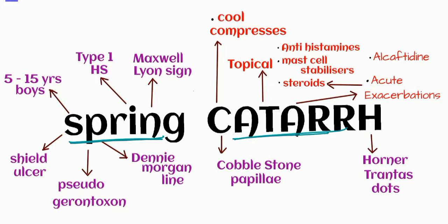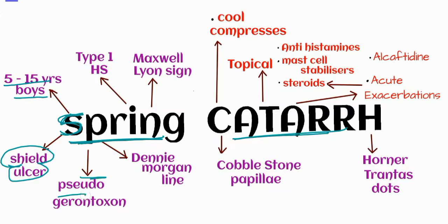From this name we are going to start. Firstly, 'S' is somewhat similar to the number five — it means VKC is most common from five to fifteen years of age, predominantly in boys. With 'S' we also remember its sign: shield ulcer. The next letter is 'P' — with P we can remember pseudogerontoxon, which means a paralimbal gray-white band of lipid deposition seen in children.